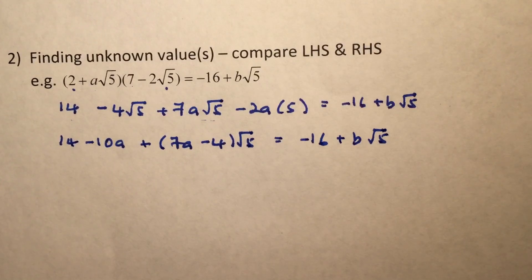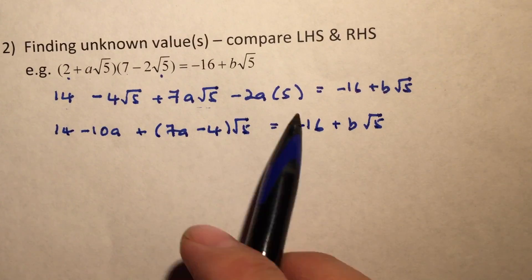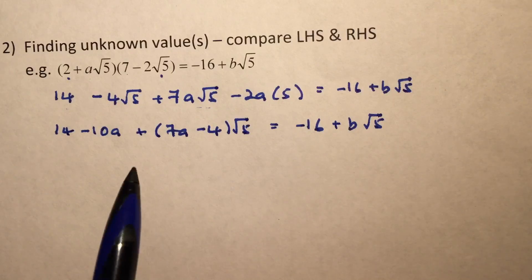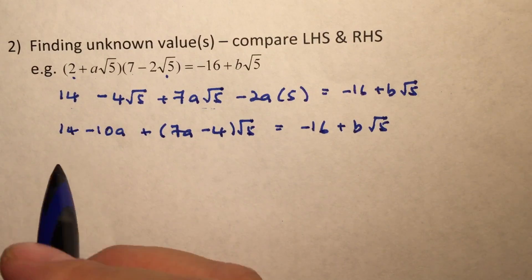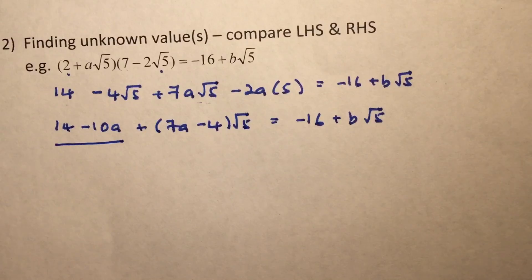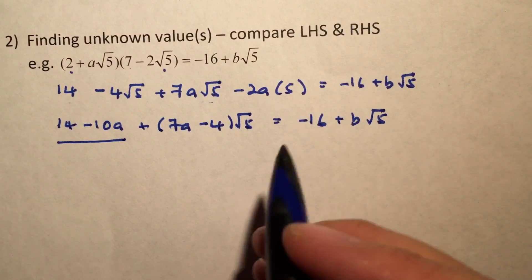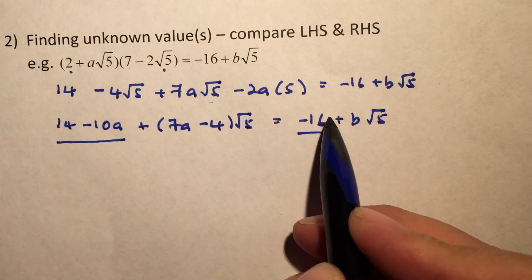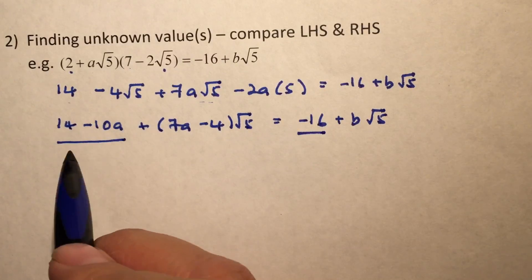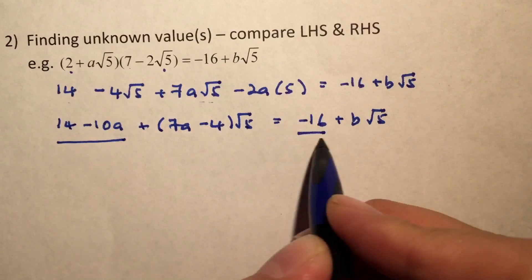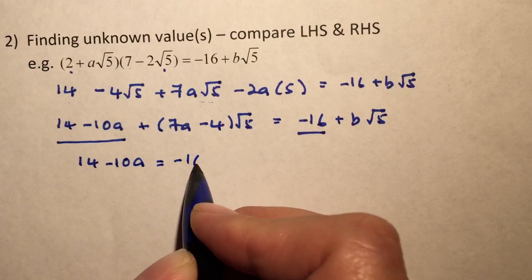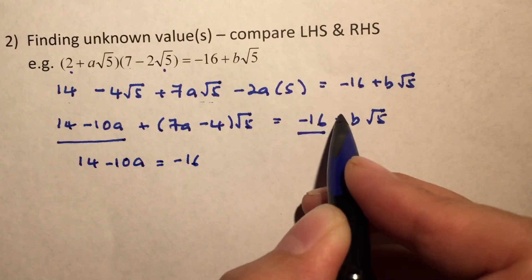So why are we actually trying to group them up together this way? It's because what we need to do now is to compare the left-hand side of the equation and the right-hand side of the equation. When we group it up this way, it must be that this one here, which is the non-surd term or the rational term, must be equivalent in value to the other side. So these two are equivalent in values. This value must be the same as this value.